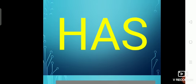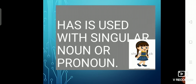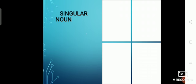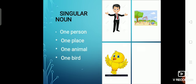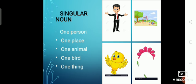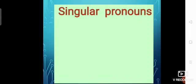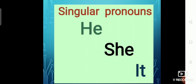Let's come to has first. Has is used with a singular noun or pronoun. Singular means when we are talking about one. Singular noun is when we are talking about one person, one place, one animal or bird, or one thing. Man, park, bird, flower — these are all examples of singular nouns. Singular pronouns are he, she, and it — they replace one noun.